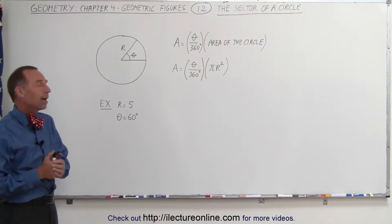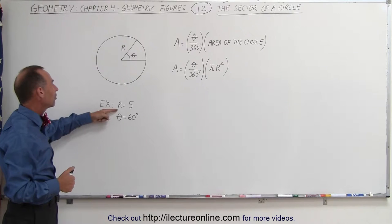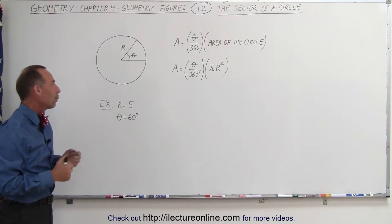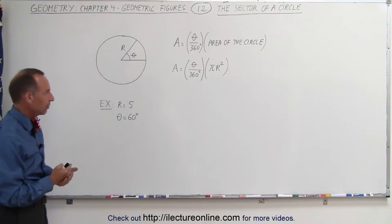So let's use an example. Let's say that we have the radius of the circle to be equal to 5, and that the angle here is equal to 60 degrees, and we want to find the area of that sector.